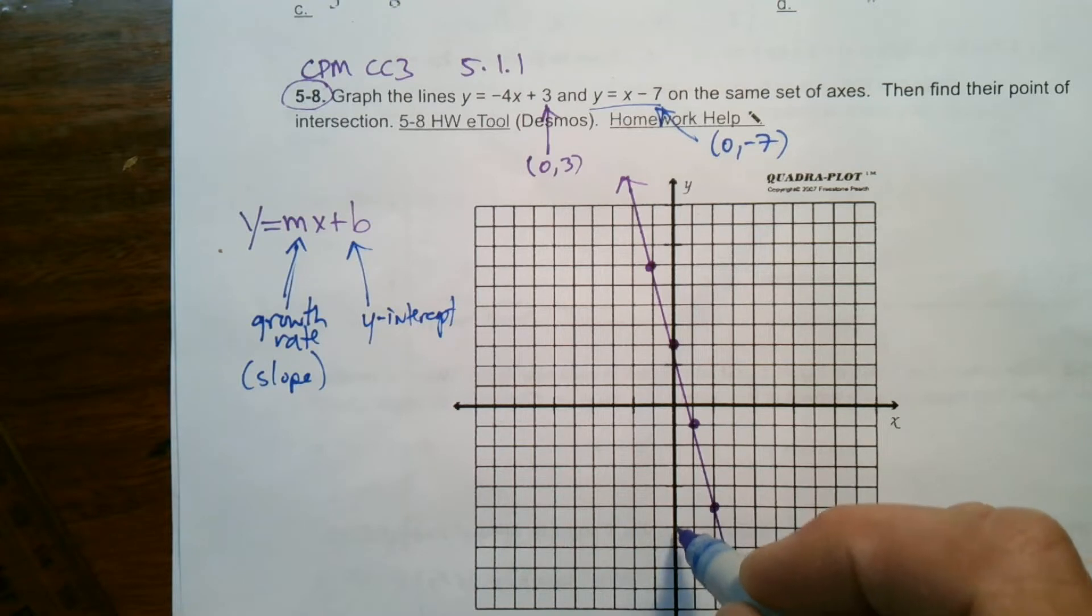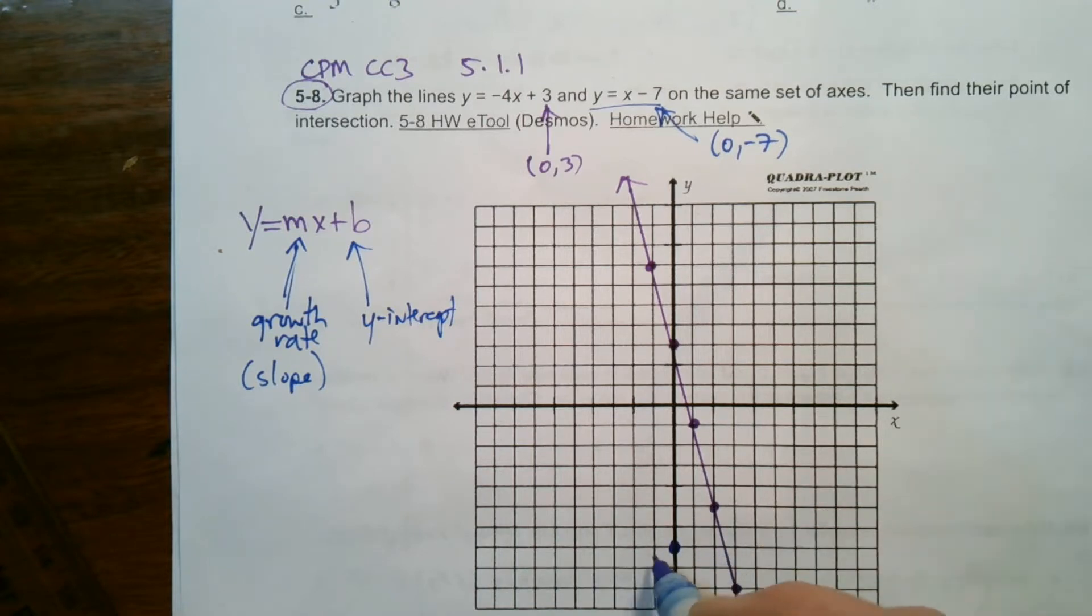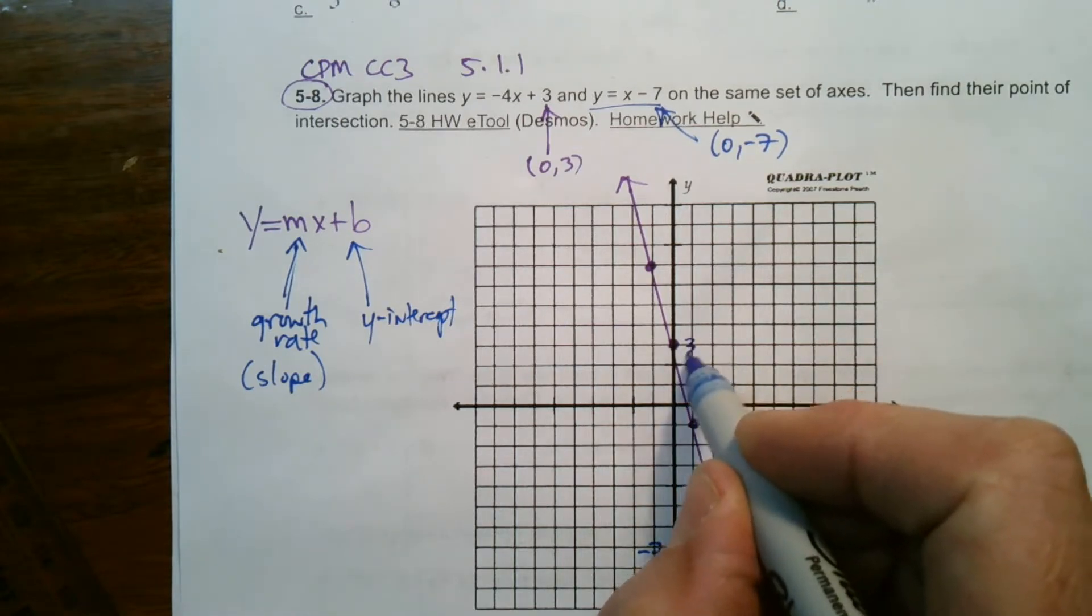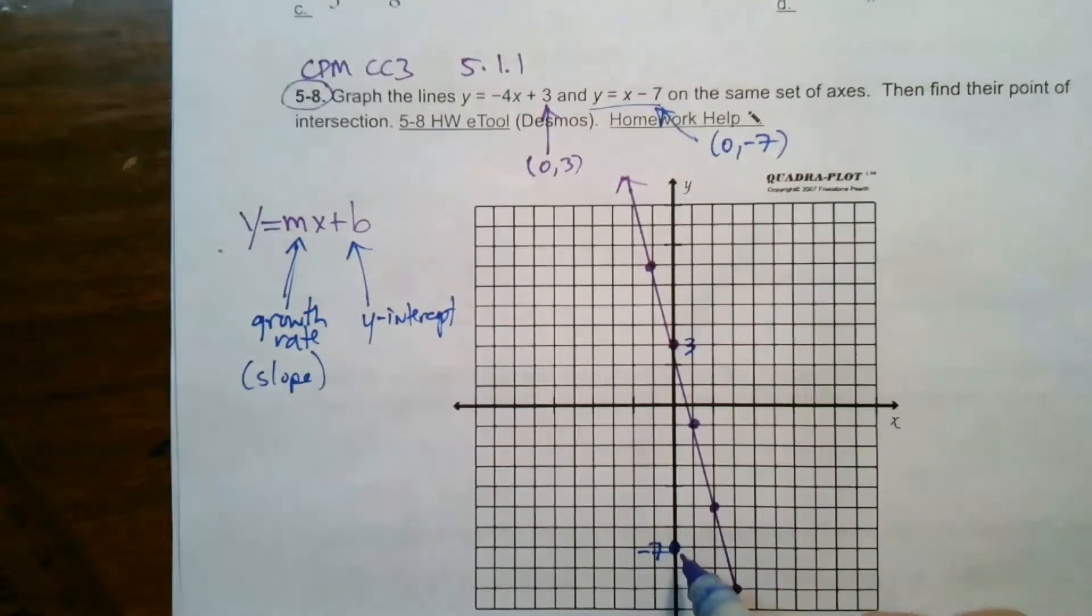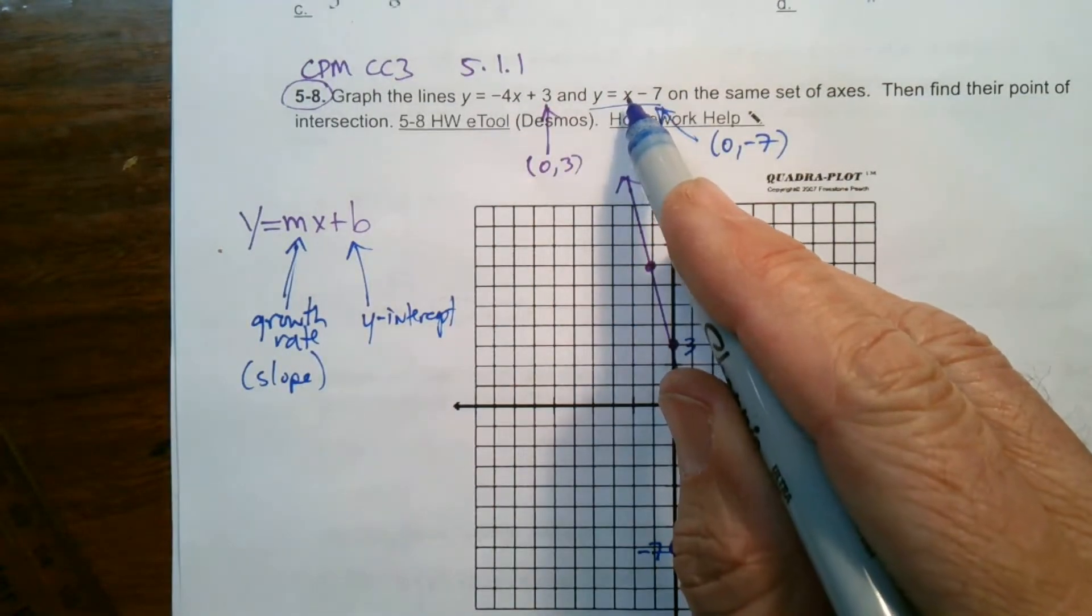So, I'll go down to negative 7. 1, 2, 3, 4, 5, 6, 7. And that's right there. So, that's the negative 7 is the y-intercept. 0, negative 7. The y-intercept for this one was at 3. I should have marked it.